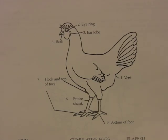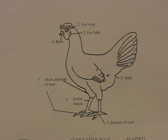Other parts of the chicken's anatomy that are important when determining coloration would be the vent, the eye ring, the earlobe, the beak, the bottom of the feet, the entire shank, and the hock and tops of toes.